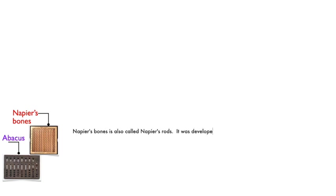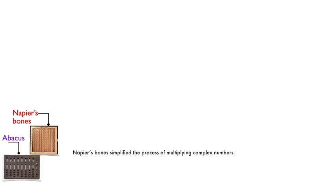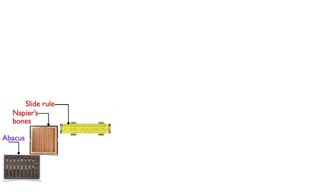Napier's bones, also called Napier's rods, was developed by John Napier, a Scottish mathematician. The device was made of bones that had digits printed on them. Napier's bones simplified the process of multiplying complex numbers.